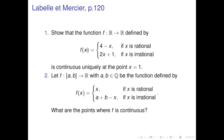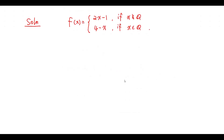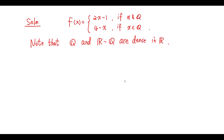Question 1. Show that the function defined by this one is continuous uniquely at the point x equals 1. Solution. Note that the set Q and the set R minus Q are dense in R.